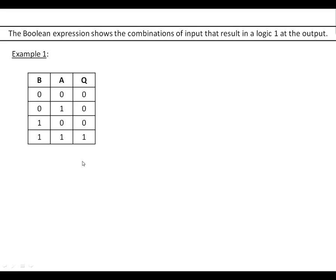Let's take this one as the first example. You recognize this as an AND gate. Now to get a 1 at the output you need both inputs to be high. The way we write this down we just say B and A. B is high and A is high. To write the Boolean expression we just write Q equals B and A. So Q is high when B is high and A is high.